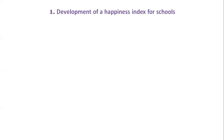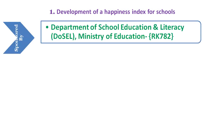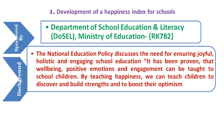The first problem in agriculture and food technology is development of a happiness index for schools, including mental health and well-being parameters among others with self-assessment facilities. This is sponsored by the Department of School Education and Literacy, Ministry of Education with the code RK782. The national education policy discusses the need for ensuring joyful, holistic and engaging school education.